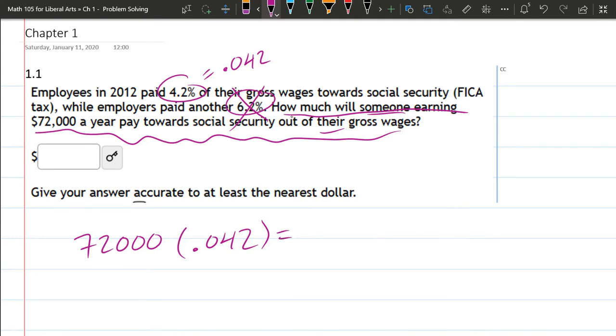This will be the percentage of their $72,000 salary they pay, and we need to give accurate to at least the nearest dollar, which means you can round or be more precise. I would just leave it fully precise, and of course we're just multiplying these two right here.